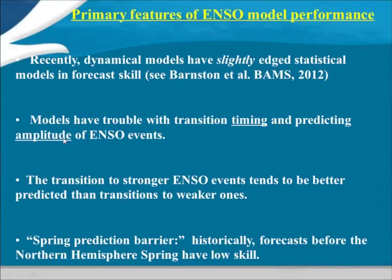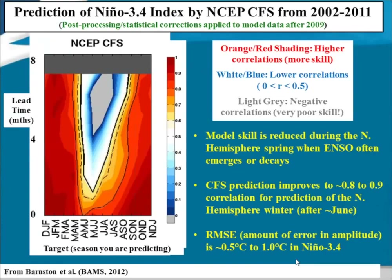The spring prediction barrier means forecasts made before the spring tend to have lower skill. This shows anomaly correlation for the Climate Forecast System over the last 10 years — the x-axis is the target season, the y-axis is the lead time. Skill can be pretty good during winter and fall, but there's a big hole — the manifestation of the seasonal prediction barrier. You generally have to get through the spring and summer before having more confidence. The root mean squared error is around 0.5 to 1.0°C, which is quite large given that El Niño thresholds are about ±0.5°C.